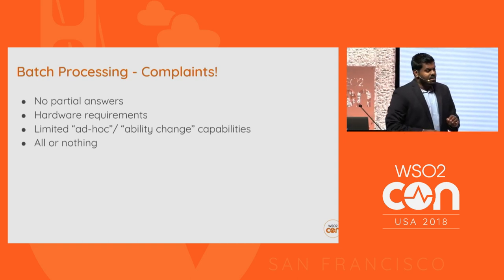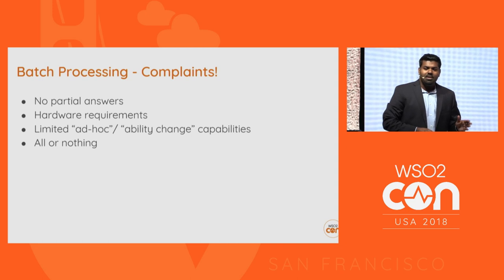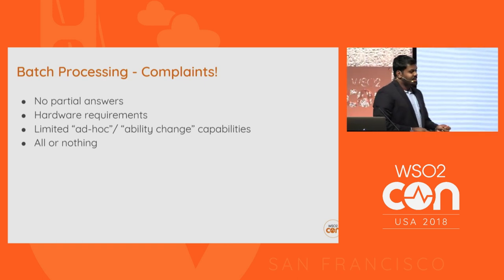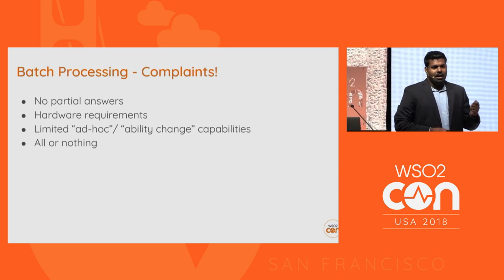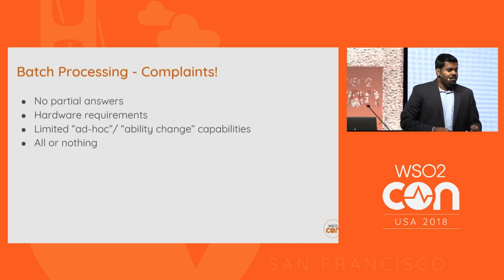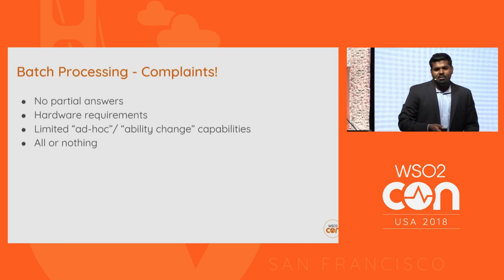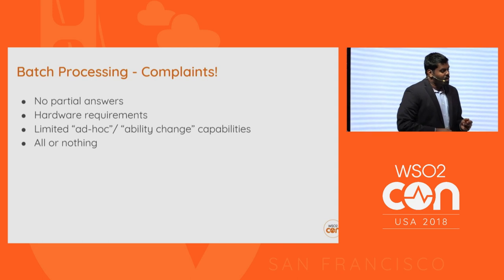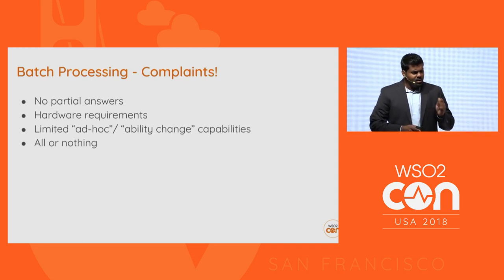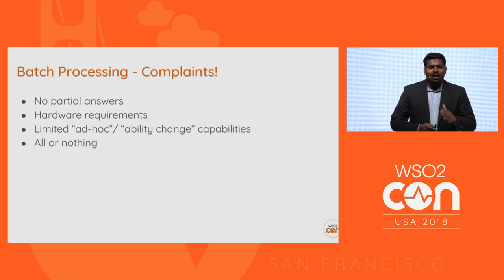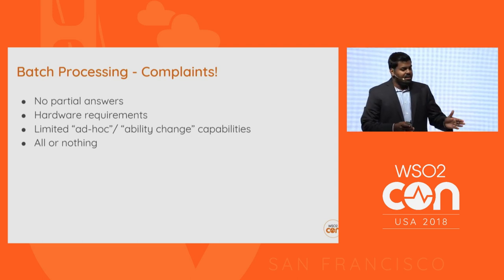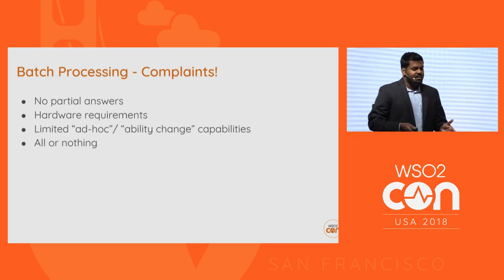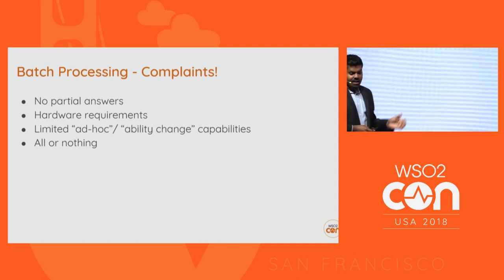The second complaint is that most batch processing requires heavy hardware — processors, memory, hard disk, and so on. If you just want to gather simple data and apply a set of rules, you don't need a 16-core machine with 16 GB of memory. One more complaint is limited ability to change capacity: if you've defined a set of rules and you see a need to change them, you cannot make any changes while the batch is processing.